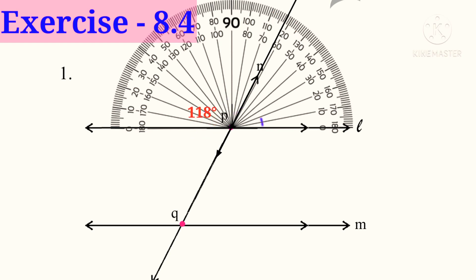Now on the right side angle, see the lower scale: 0, 10, 20, and so on. 60 after 2 lines, that is 62 degrees — the line N is showing on the protractor. So left side angle is 118 degrees and right side angle is 62 degrees.